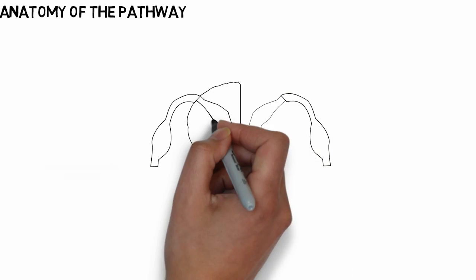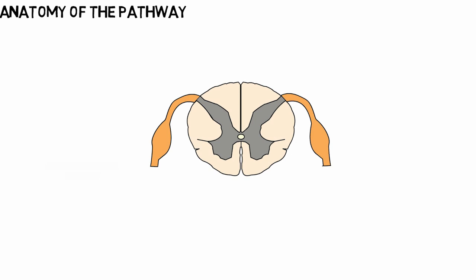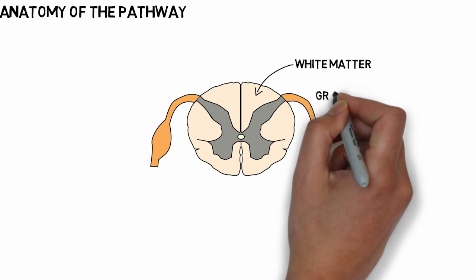Let's have a brief overview about the anatomy of this pathway. This is the cross section of the spinal cord showing the white matter, the central butterfly-shaped grey matter.